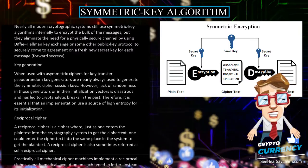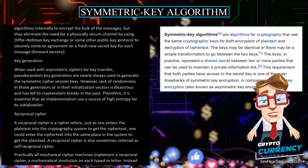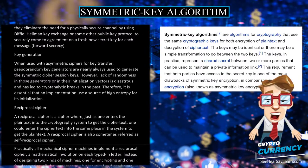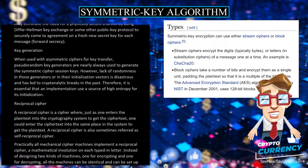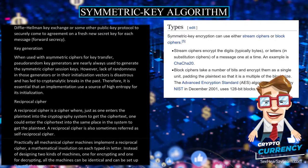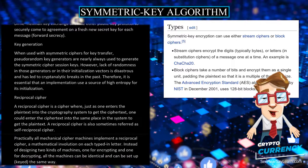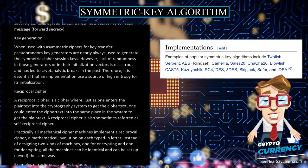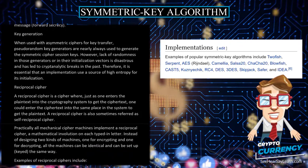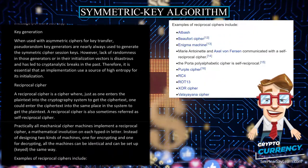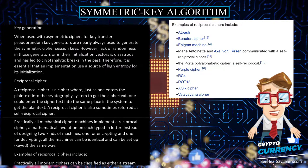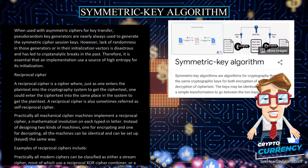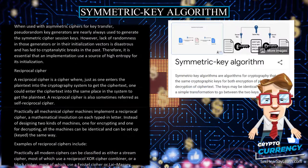Key Generation: When used with asymmetric ciphers for key transfer, pseudo-random key generators are nearly always used to generate the symmetric cipher session keys. However, lack of randomness in those generators or in their initialization vectors is disastrous and has led to cryptanalytic breaks in the past. Therefore, it is essential that an implementation use a source of high entropy for its initialization.